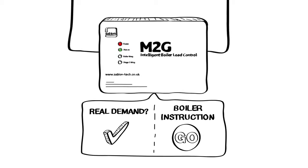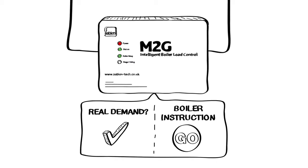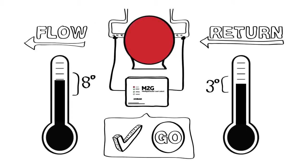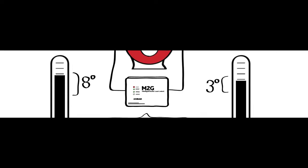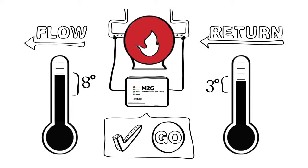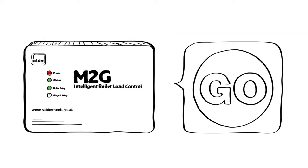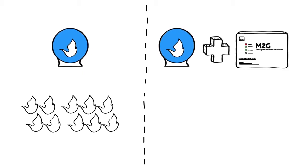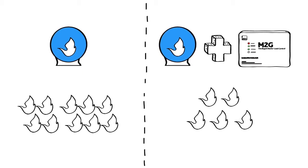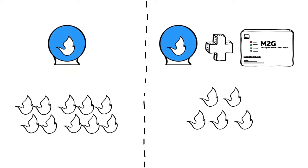M2G identifies whether there is a need for heat or if the boiler is merely dry cycling. Once the boiler does fire up, the process starts again and a new snapshot is taken to measure the flow and return temperatures for the M2G to base its actions on. This means M2G reduces the amount of times your boiler fires in a day as it stops them from dry cycling.